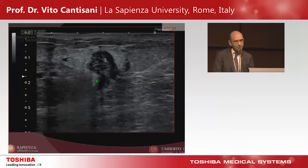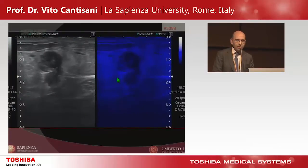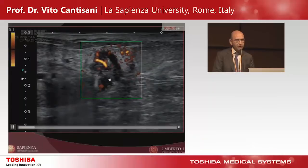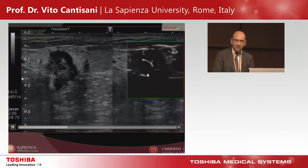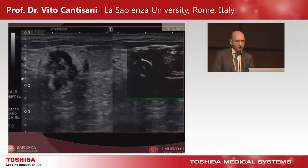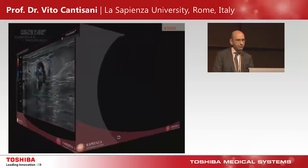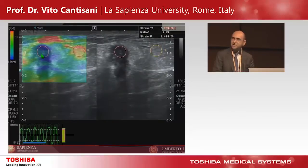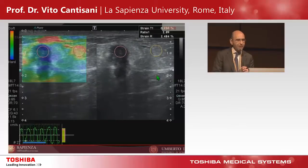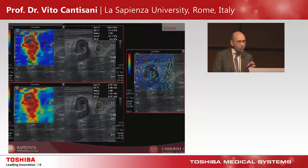I would like to show this hyperechoic, taller-than-wide lesion with no microcalcifications even using Micropure. Looking at color Doppler, power Doppler, and then SMI, you see how nicely all the tiny vessels within the lesion are depicted. At strain elastography the lesion appeared blue with some green areas, because the central part of some breast cancers may appear soft. The strain ratio was high, and shear wave also nicely showed the diffusion of the lesion and the surrounding edema.